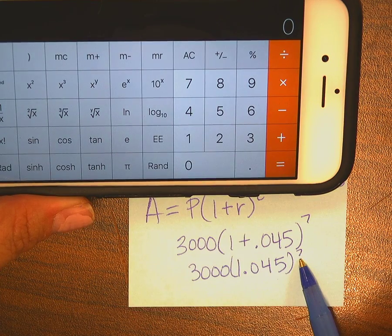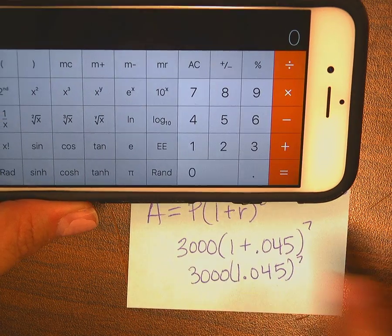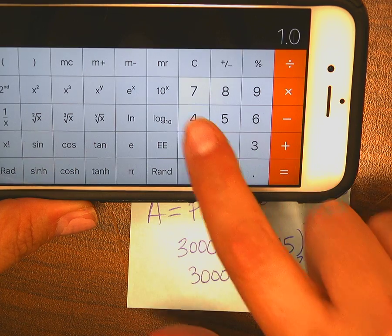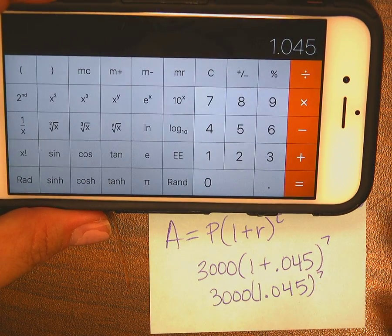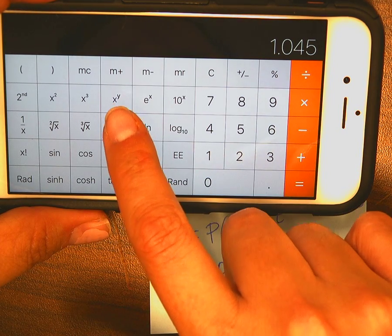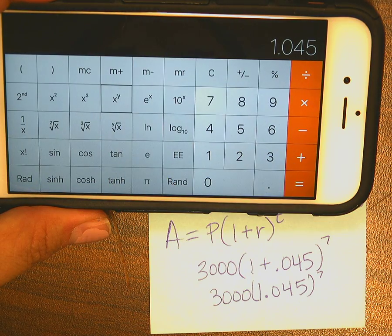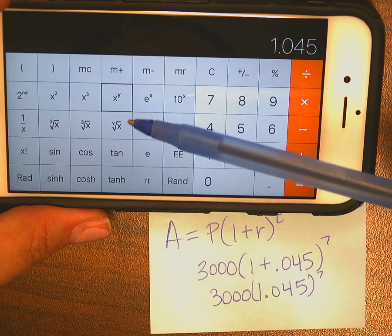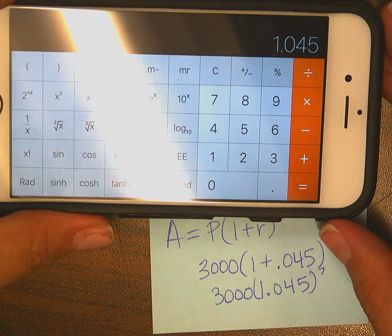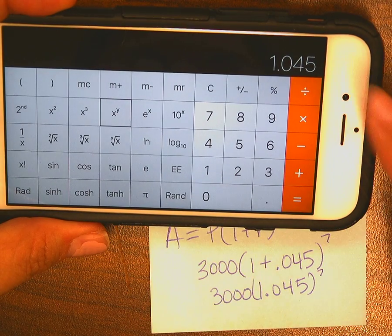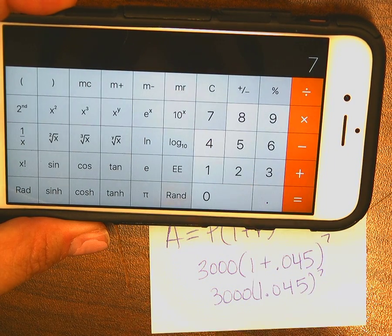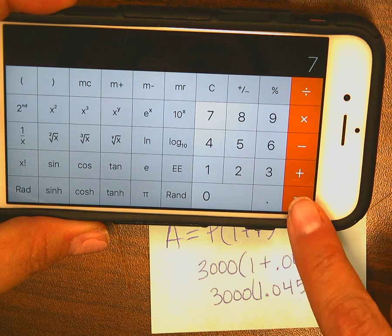And now exponents is next. So I'm going to take this number, 1.045, and I'm multiplying it by a power of 7. This is where you're using your X to the Y button, which is right there. You press that and notice you have like a little box that kind of goes around it to show that it's been selected. It might be difficult to see, but it's already been selected. And I now just choose the number 7 because I've raised it to the power of 7.